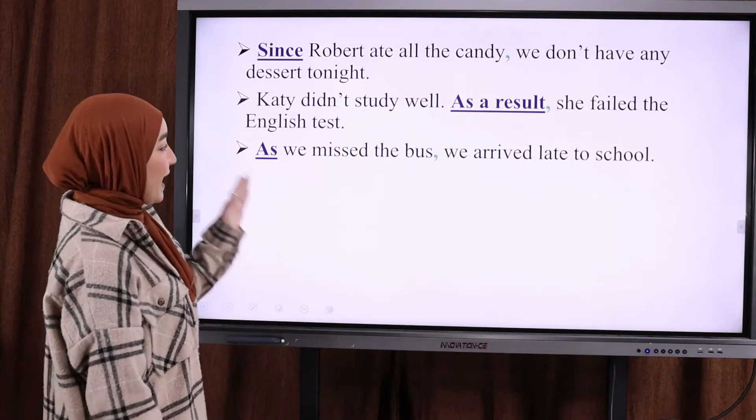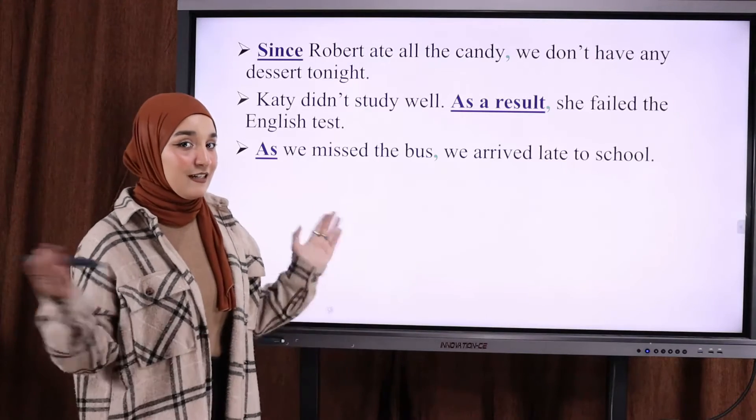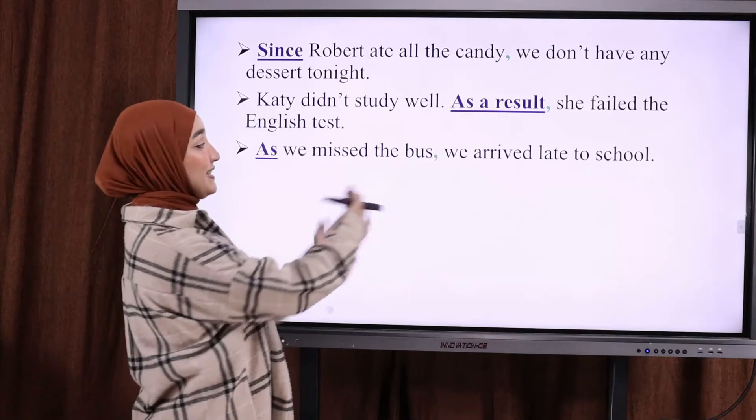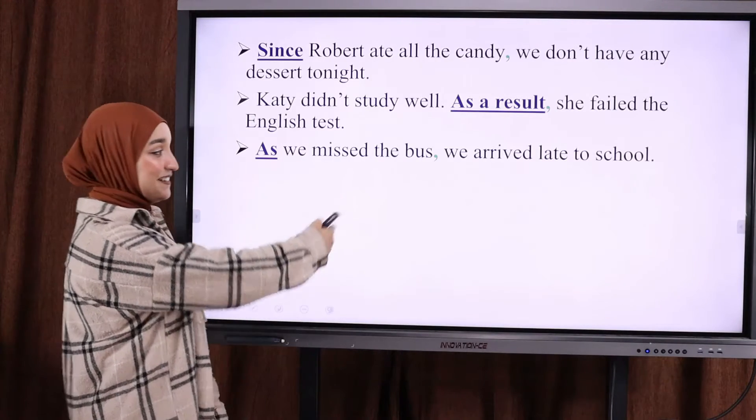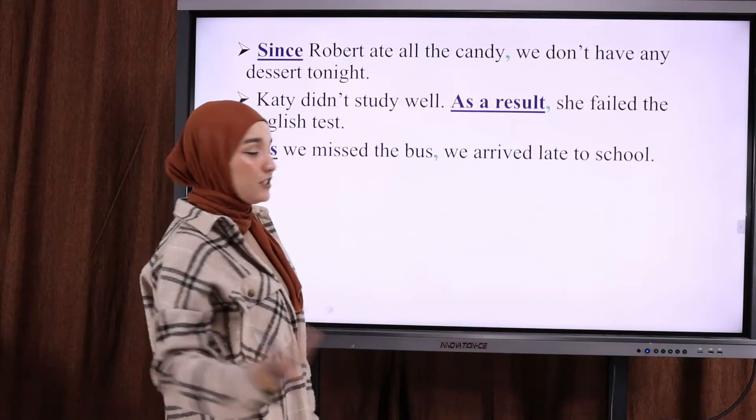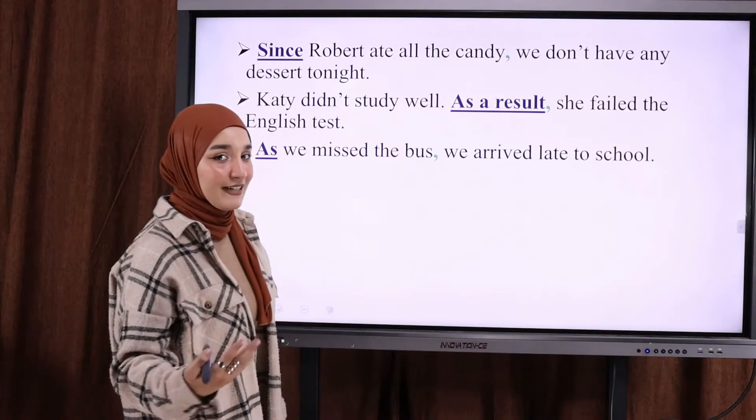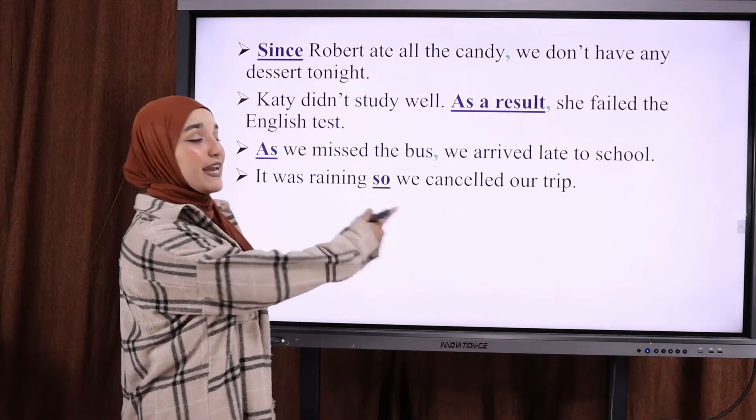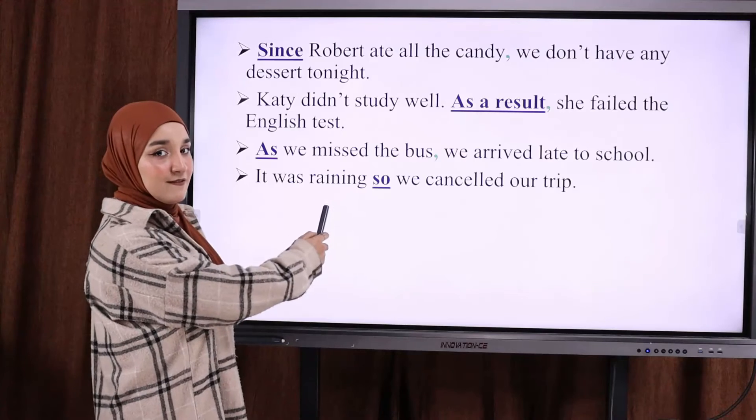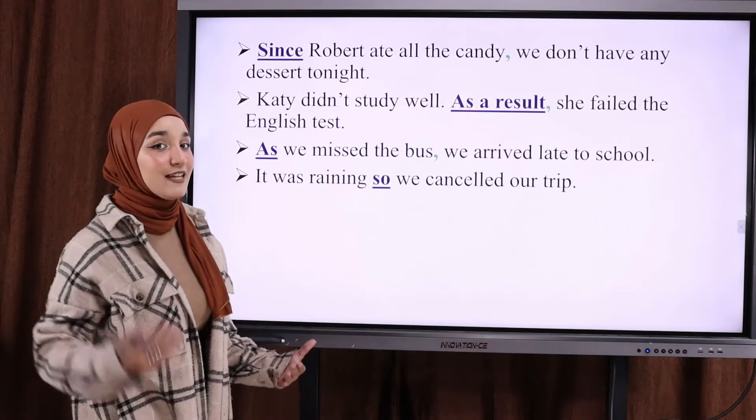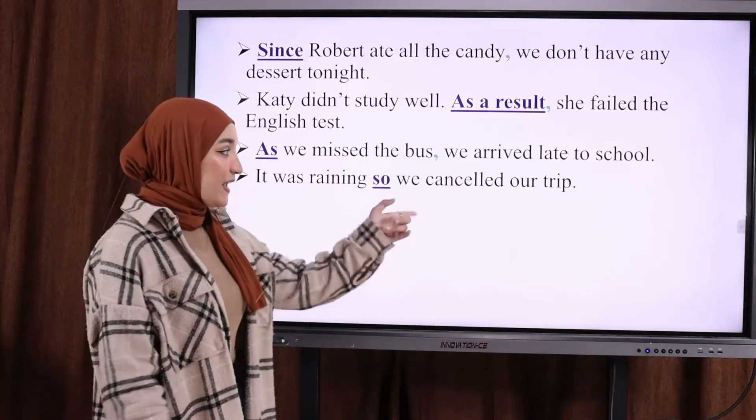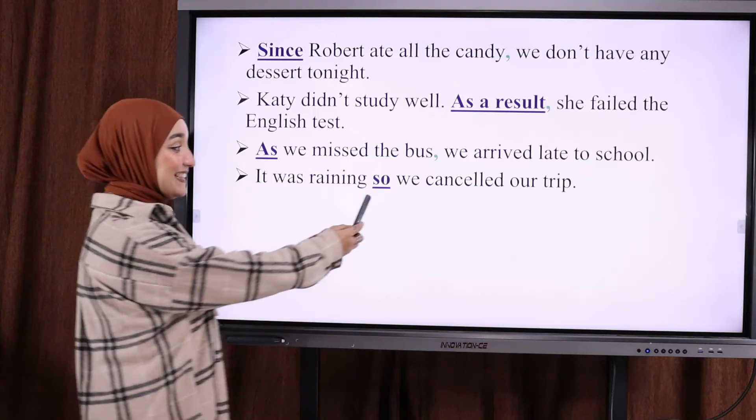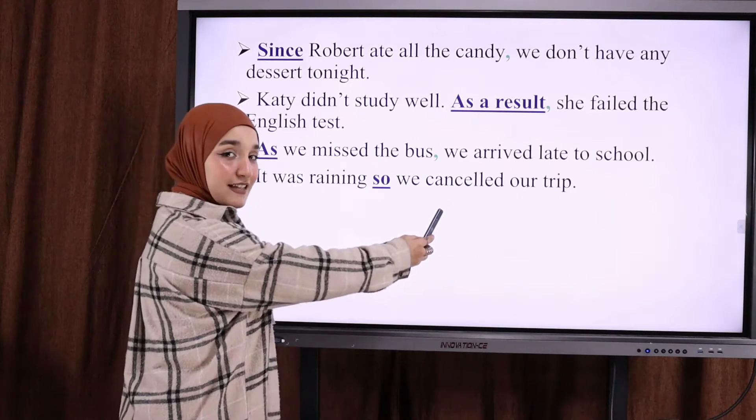Another example. As we missed the bus, we arrived late to school. The effect, the outcome. We arrived late to school. The next example, it was raining, so we cancelled our trip. It was raining. This is the cause. So. We cancelled our trip. The trip is cancelled. The cause, the connector, the effect.